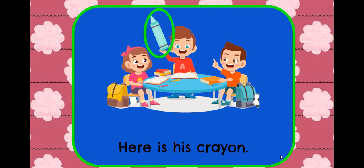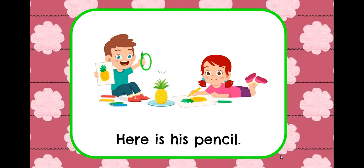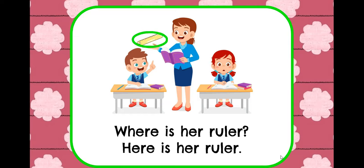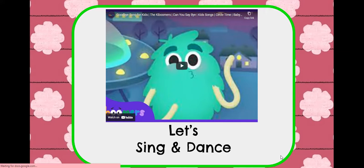Then you ask them questions: 'Where is his crayon? Here is his crayon. Where is his pencil? Here is his pencil. Where is her ruler? Here is her ruler.'